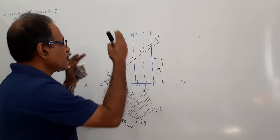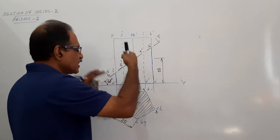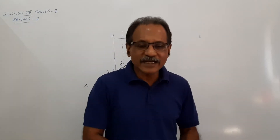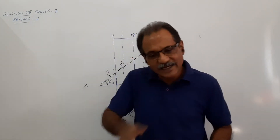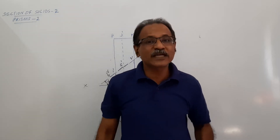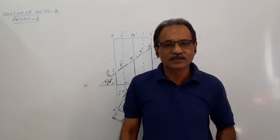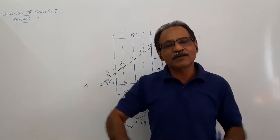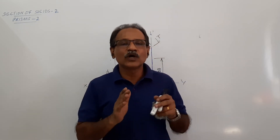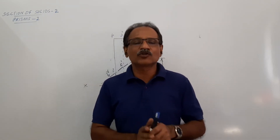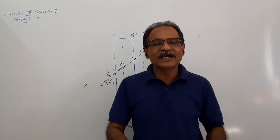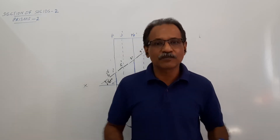You have completed the sectional elevation and the sectional plan. Now, since the cutting plane is inclined, you have to look perpendicular to the cutting plane to see the true shape of the section. Whenever a cutting plane is inclined to the reference plane, you have to look perpendicular to the cutting plane to see the freshly cut surface and get the true shape.